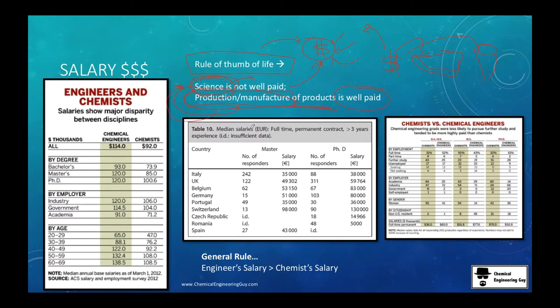So here it goes: engineers versus chemists. We have different sections by employer, by age, by degree, but in general, as you can see, this is $114,000 per year. So that's about almost $10,000 US dollars per month. The chemist is not that behind. That will be about a little bit less than maybe $8,000 US dollars per month.